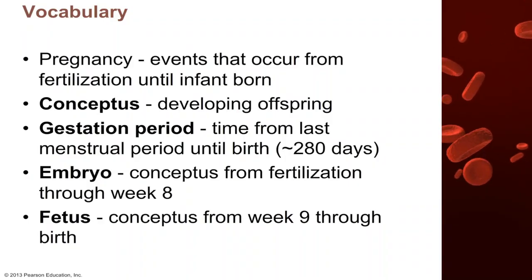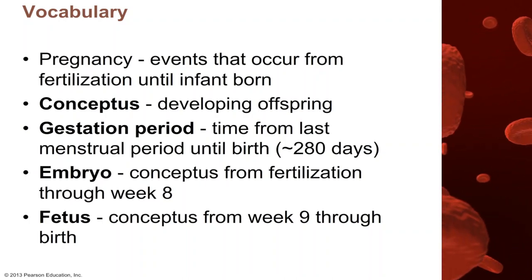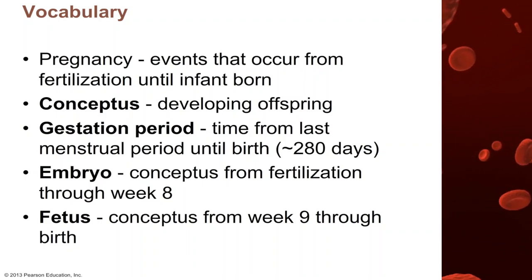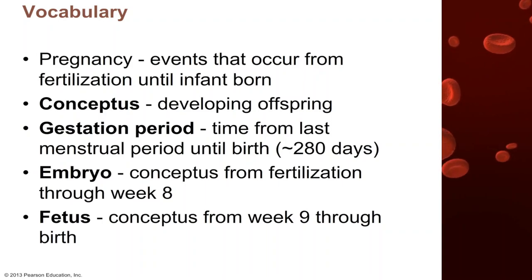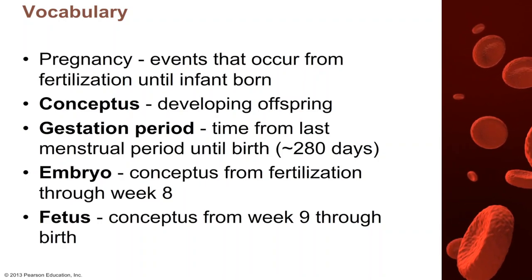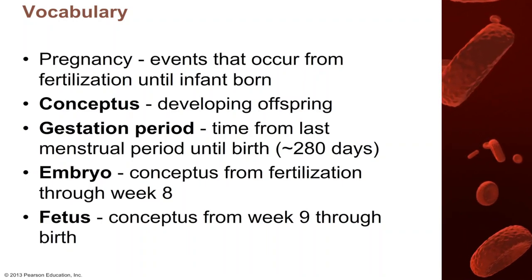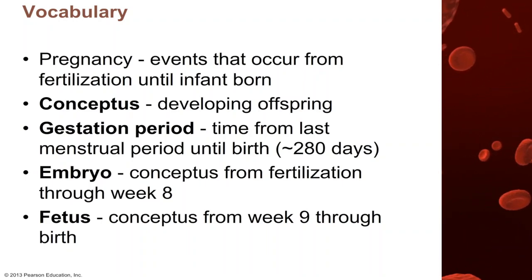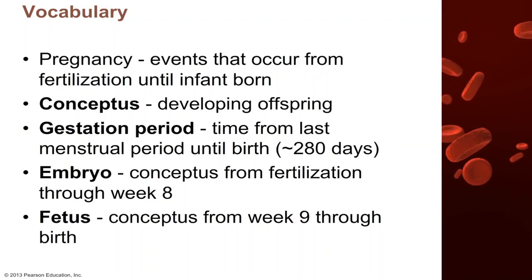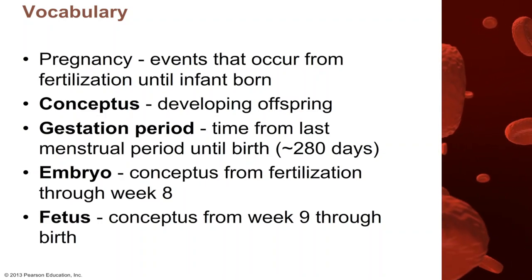Before we get started on today's lecture, we're going to cover a little bit of vocabulary. Pregnancy is all the events that occur from the time of fertilization until parturition, that is when the infant is born. The conceptus is the developing offspring — the fertilized egg from the minute of fertilization all the way until labor and birth. The gestation period is the time from the last menstrual period until birth, around 280 days. The embryo is the conceptus from fertilization through week 8, and a fetus is the conceptus from week 9 through the time of birth.